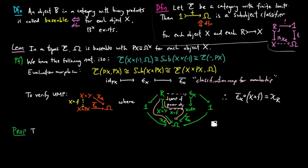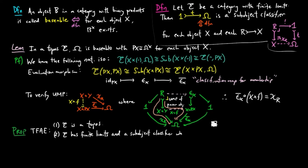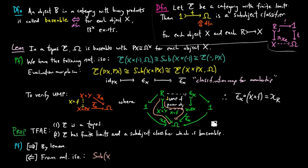Then it is easy to prove the following are equivalent: one, E is a topos; and two, E has finite limits and a sub-object classifier which is baseable. One implies two comes from the lemma above, and two implies one from the natural isomorphisms, where the first isomorphism is by the definition of Ω as a sub-object classifier and the second since Ω is baseable. Thus, Ω to the X is a power object of X, showing E has power objects, and is thus a topos.